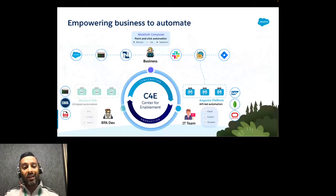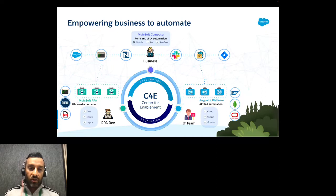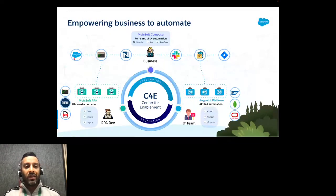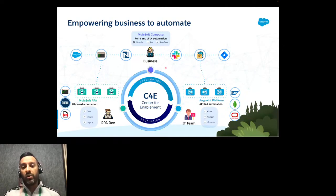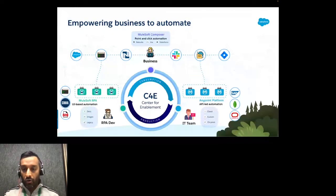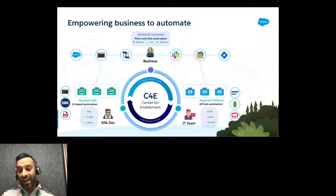Business asks the RPA or automation team to build a UI-based unlock for, say, an old mainframe application, and share it within Composer. Now ownership returns to the business persona — for small data-side changes, they can do it themselves without going to IT or the automation team. The communication overflow is brought to a minimum. Automation is always a team sport — IT creates the assets and enables business to consume and build their own automation processes.